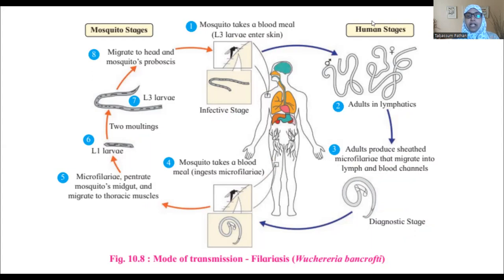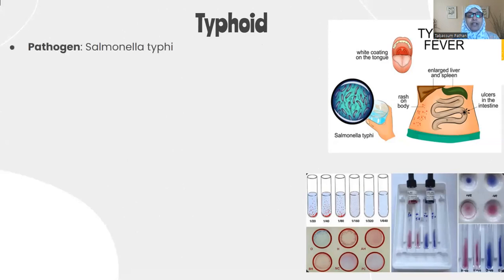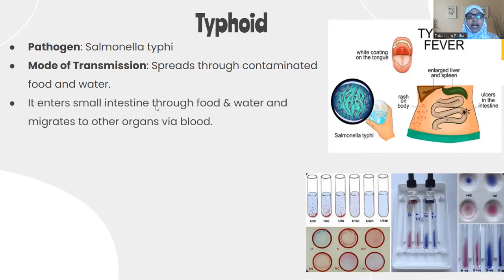That is a short overview of the transmission of Wuchereria bancrofti, the causative agent of filariasis. Moving to typhoid: typhoid is a very common bacterial disease. It is again an infection of the intestine, caused by the bacterium Salmonella typhi. It spreads through contaminated food and water — insects like flies and cockroaches feeding on fecal matter can transfer bacteria to food. Poor hygiene and poor sanitation are responsible for spreading typhoid.